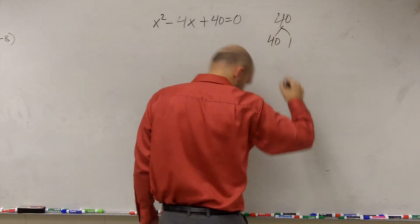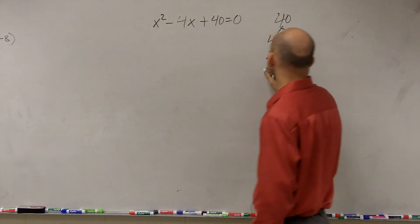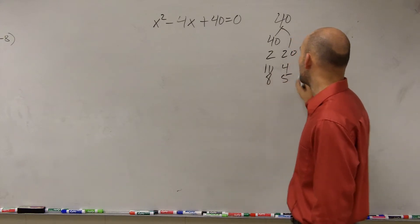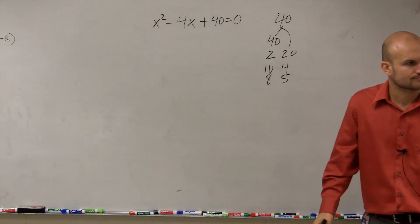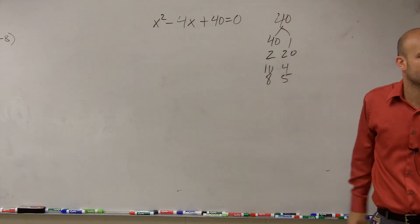So factoring, I could do 40 and 1. I could do 2 and 20. I could do 10 and 4. I could do 8 and 5. And is that all my factors? Yeah. And I know that they have to add up, but none of these, when I multiply them, we're going to be adding up.